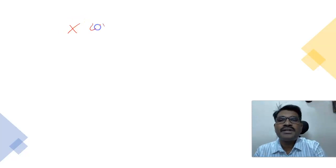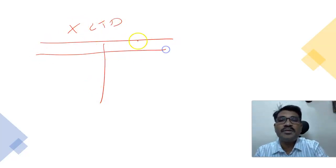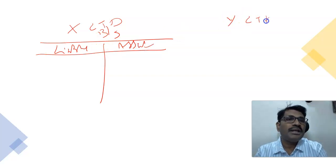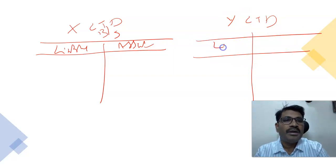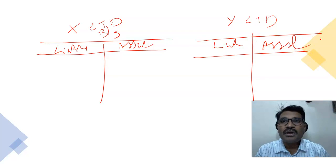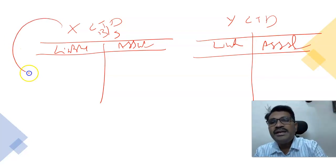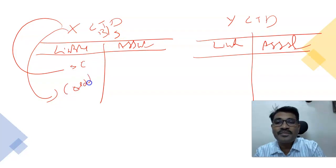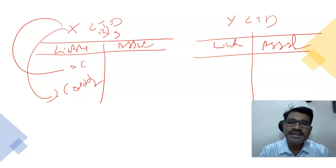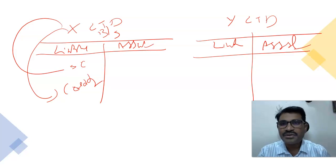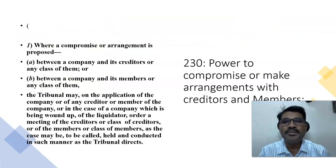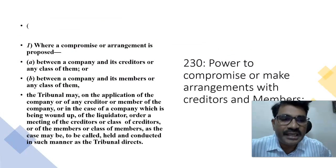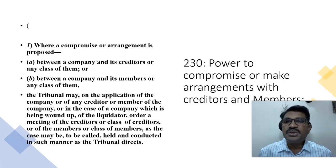To illustrate: take X Limited with its balance sheet of liabilities and assets, and Y Limited with its own liabilities and assets. A company and its shareholders, or a company and its creditors, or a group of creditors may form a scheme of arrangement or restructuring of companies. I will explain this terminology further using the balance sheet and the language of the Companies Act.